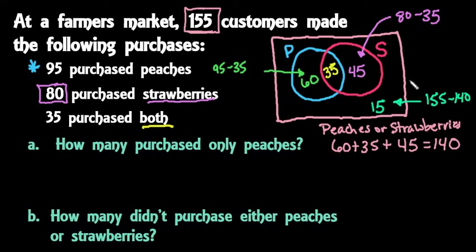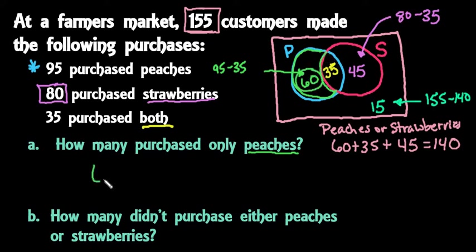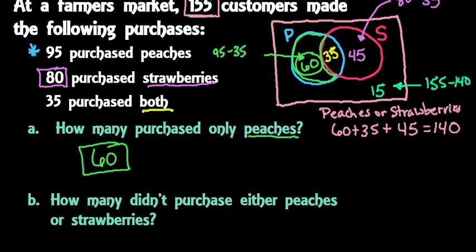You could have answered these questions without drawing the picture, but having the picture helps you answer them much more quickly. The first question asks how many purchased only peaches — we're looking at just the outer region of the peaches circle, not the overlap. So 60 is the total that purchased just peaches.